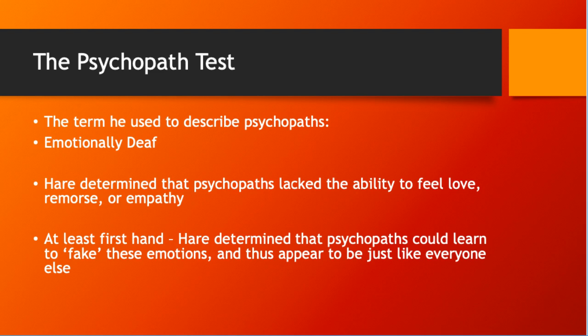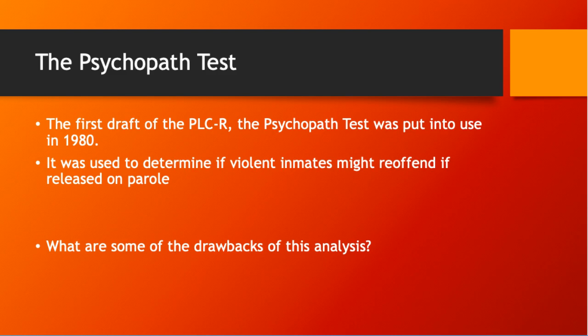Hare determined that psychopaths lack the ability to feel love, remorse, or empathy — at least firsthand. He also determined that psychopaths could learn to fake these emotions and thus appear to be just like everyone else. While Hare started his research in the 1960s, the first draft of the PCL-R, the Psychopath Test, was put into use in 1980. It was used to determine if violent inmates might re-offend if released on parole.